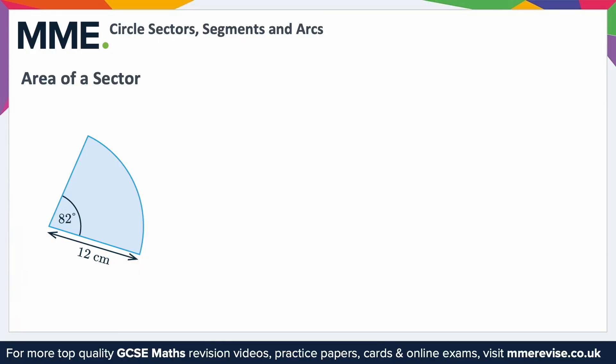To calculate the area of a sector, first we need to know the area of the full circle, as a sector is effectively just a fraction of the full circle — a little cut out of it. A full circle has area πr².